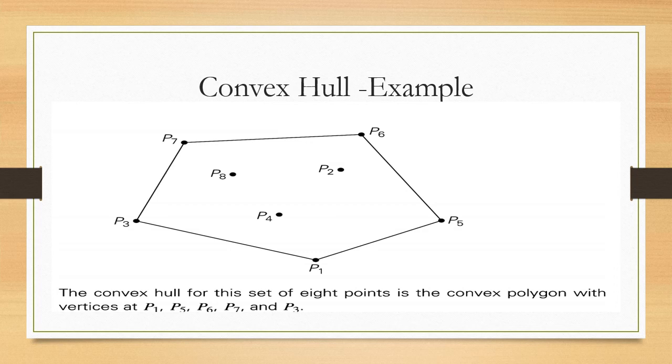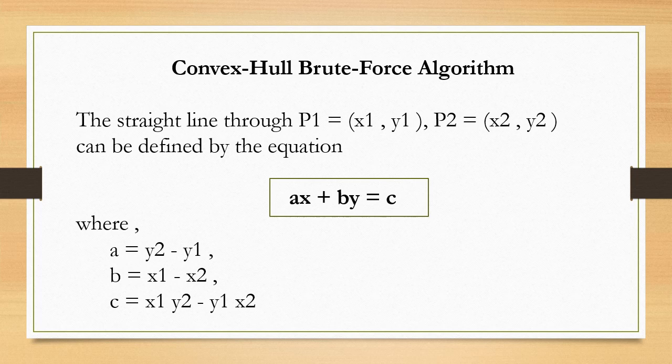Now, convex hull using brute force algorithm. The straight line passing through points P1 = (x1, y1) and P2 = (x2, y2) can be defined by the equation ax + by = c, where a = y2 − y1, b = x1 − x2, and c = x1·y2 − y1·x2.